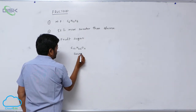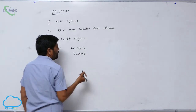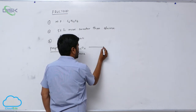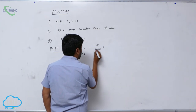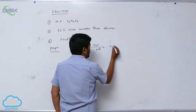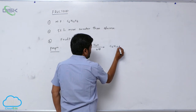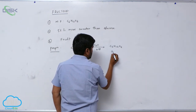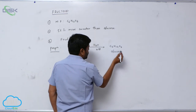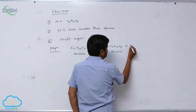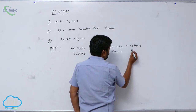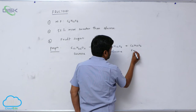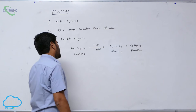Preparation: sucrose, C12H22O11, on hydrolysis forms C6H12O6 known as glucose, plus C6H12O6 known as fructose.